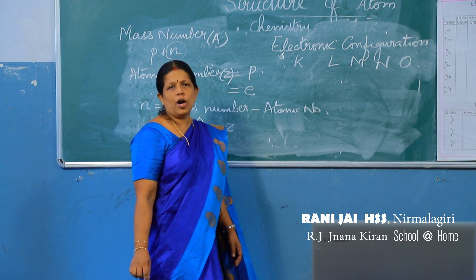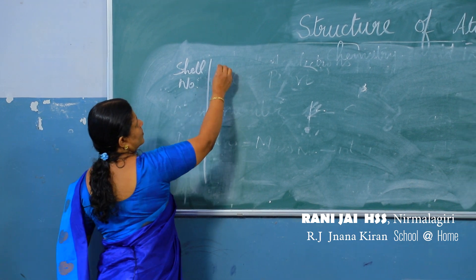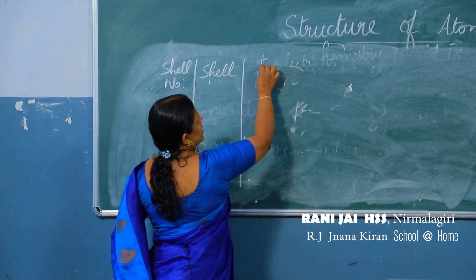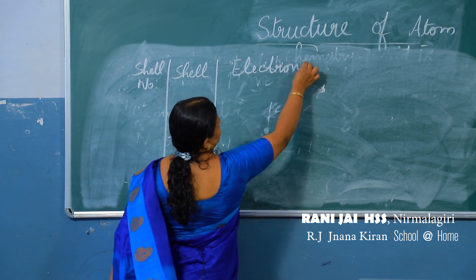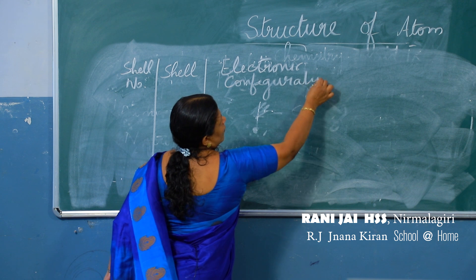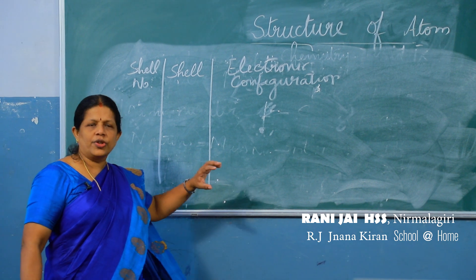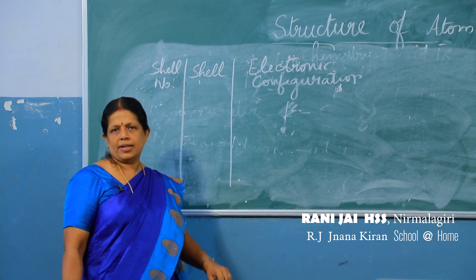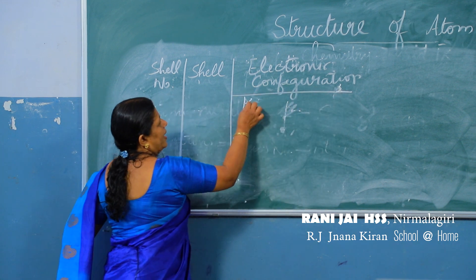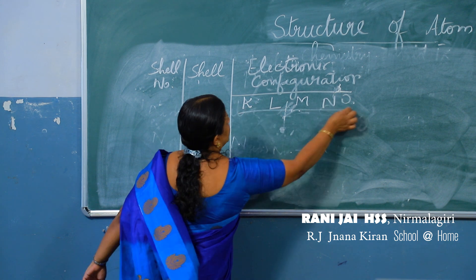Now we will see how electrons are distributed in each shell. The arrangement or distribution of electrons in various shells is called electronic configuration. The shells are K, L, M, N, and O, as we have studied earlier.